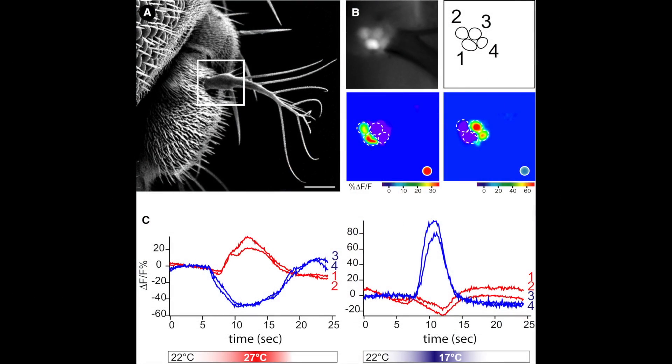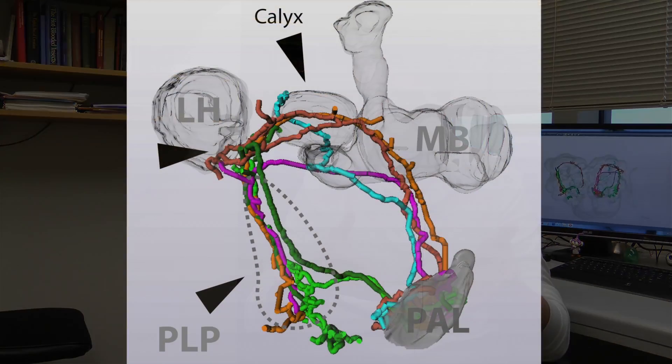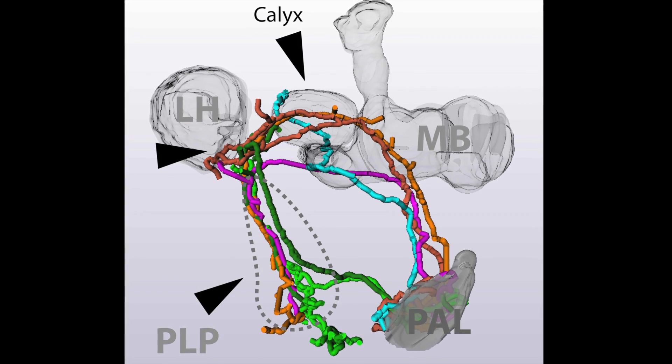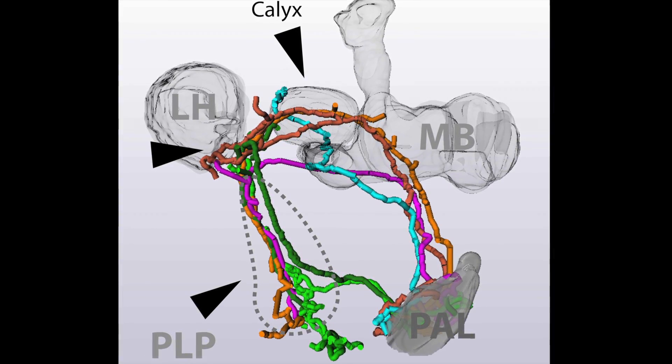What we found makes a lot of sense, because the brain needs to break down information about the sensory stimulus. Some of the information you might want to have is the dynamics of a temperature change — when does it start, when does it stop, how hot and how cold it gets, and perhaps information about how dangerous it is. We find exactly populations of cells that respond to these parameters.